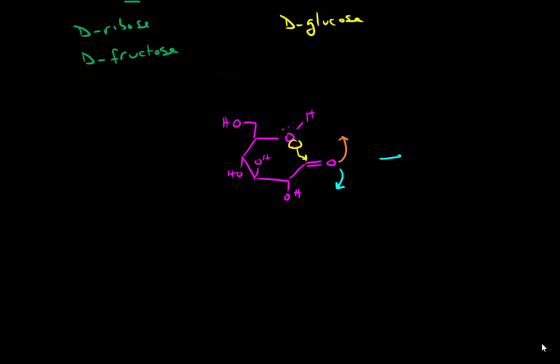So we can actually end up with two different forms of glucose. We can end up with a form where we have the alcohol pointing down or we can end up with a form where the alcohol is pointing up.